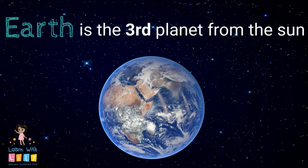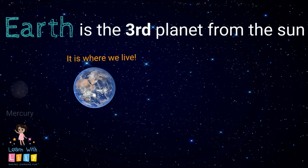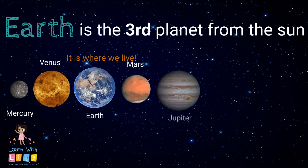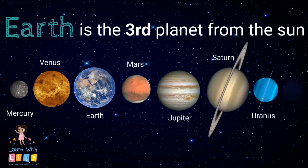Earth is the third planet from the Sun. It's where we live! The others are Mercury, Venus, Mars, Jupiter, Saturn, Uranus, and Neptune.